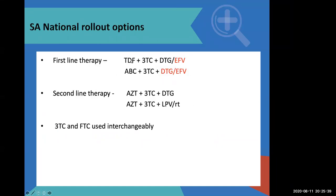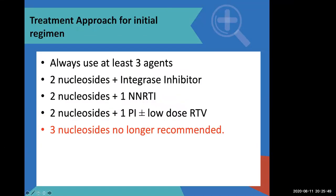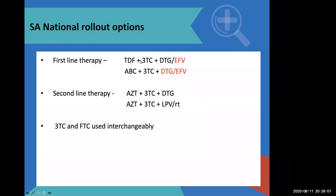This is how it looks: you've got tenofovir plus lamivudine — two nucleosides — and your choice of dolutegravir or efavirenz. The standard first-line regimen in South Africa is tenofovir, lamivudine with dolutegravir. Where dolutegravir cannot be used, we then use efavirenz. Where tenofovir cannot be used, we then use abacavir. Tenofovir is our first-line standard drug of choice; however, for patients with contraindications to tenofovir, we use abacavir.